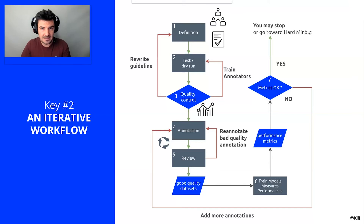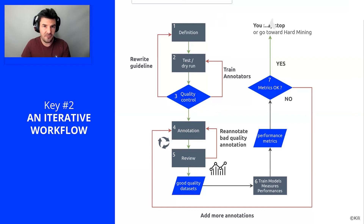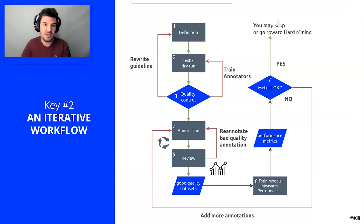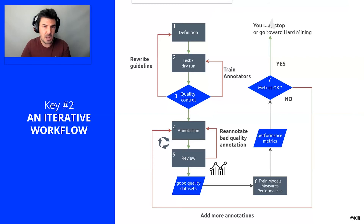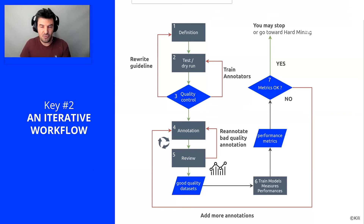Once we have robust guidelines, we enter the annotation phase. Here we annotate batches of images to pace the project, and the data project manager is able to review the annotated images in real time. We can detect, for example, those that have a bad consensus and ask for re-annotation. This allows us to quickly obtain a first quality dataset that will be transferred to the R&D team.